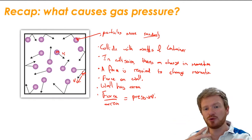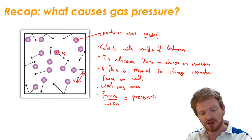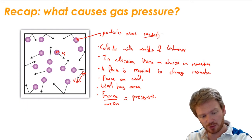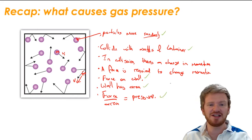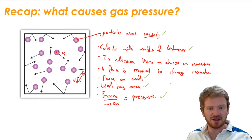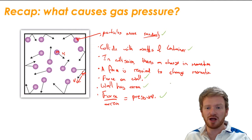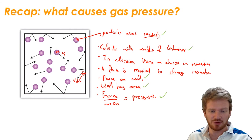So gases cause pressure because as they move around and collide with walls they are exerting a force on those walls, and that force creates a pressure over that surface area. It's quite important that you learn those steps in the logic. For IGCSE the most important steps are the particles moving, colliding with walls, exerting force, and that force creating pressure. CIE don't normally check that you've talked about the change in momentum, but they do check it at A-level, so it's worth being really clear on how that happens.